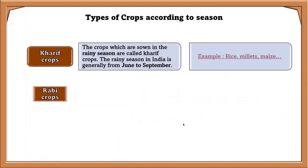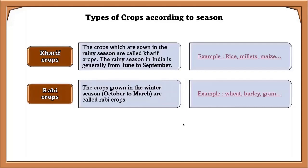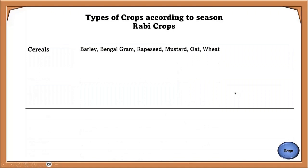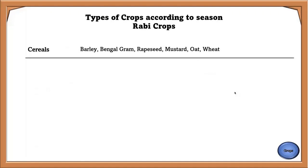Rabi crops, or winter crops, are crops grown in the winter season from October to March. Rabi cereals include barley, Bengal gram, rapeseed, mustard, oat, and wheat.